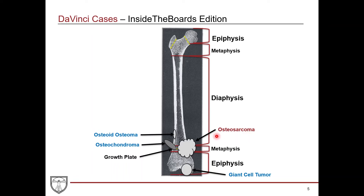Getting into malignant tumors: osteosarcoma is the most common primary malignant bone tumor. It arises in the metaphysis and has a bimodal distribution — the younger population, typically kids 10 to 20 years old, and then another spike in patients over 65. Risk factors include Paget's disease of the bone, bone infarcts, radiation exposure, and genetic conditions like familial retinoblastoma or Li-Fraumeni syndrome, which involves a mutation in the P53 cell cycle regulator. These typically occur in long bones around the knee — either the distal femur or the proximal tibia.